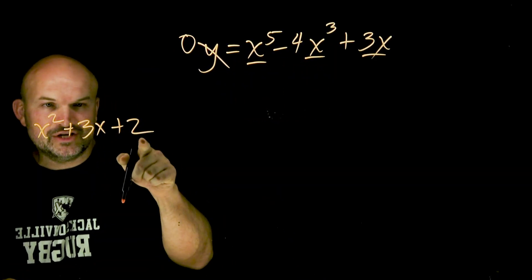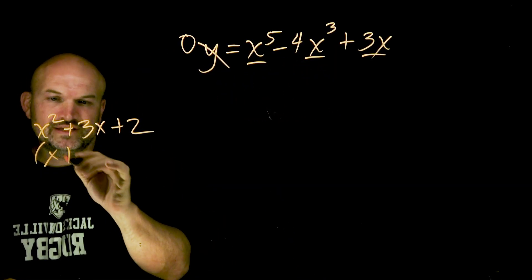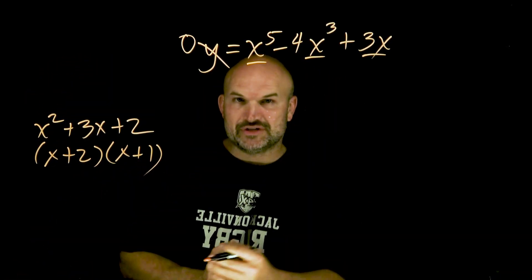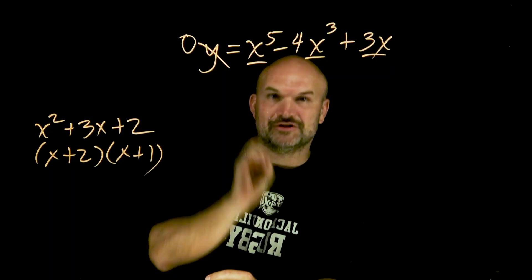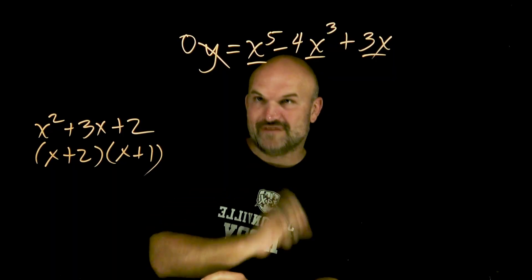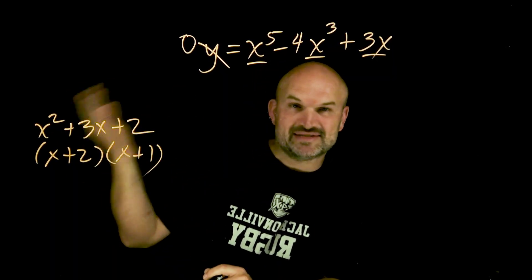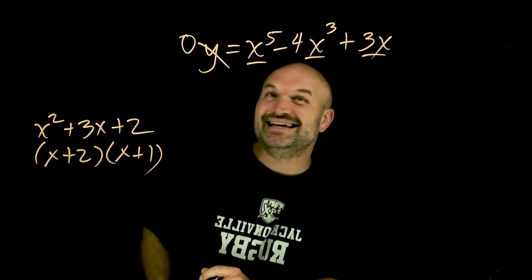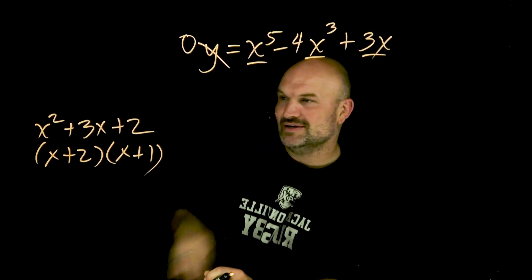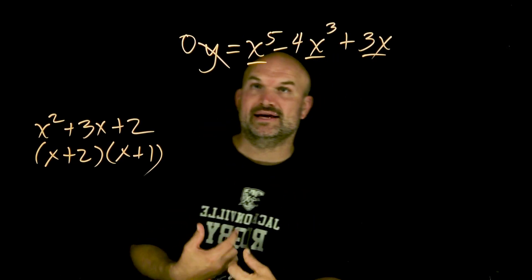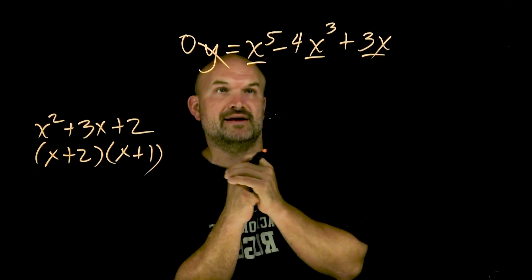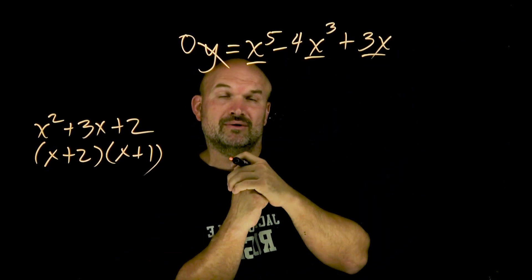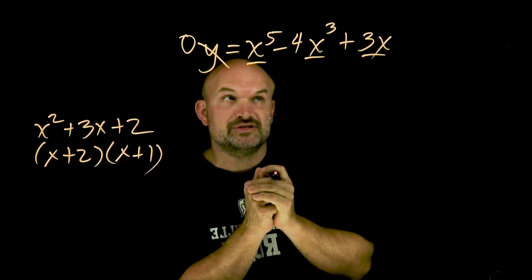What two numbers multiply to give us two that add to give us three? We should be able to do that rather quickly. However, now we have something raised to the fifth power — it doesn't look that simple. So here are a couple techniques we need to think about when dealing with finding the zeros of a polynomial, especially when it's raised to the fifth power or any other higher order power: look to factor out a common term.